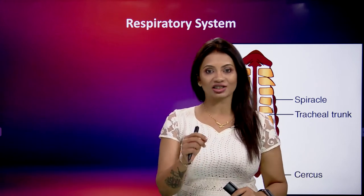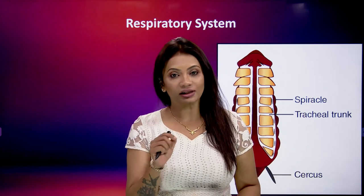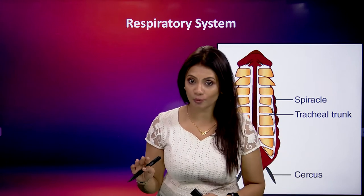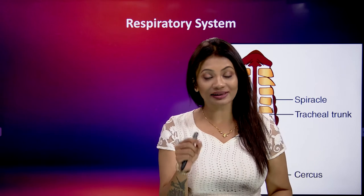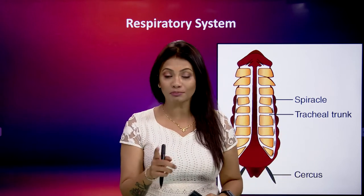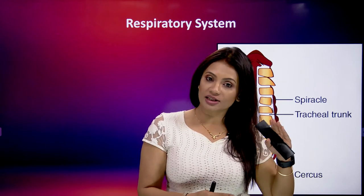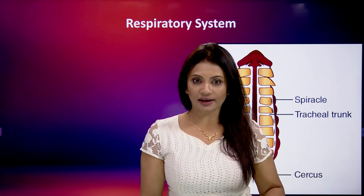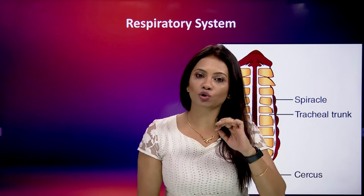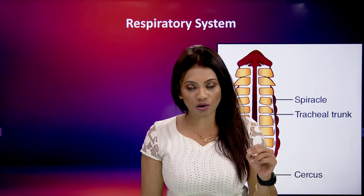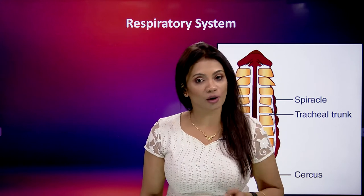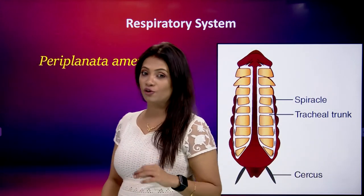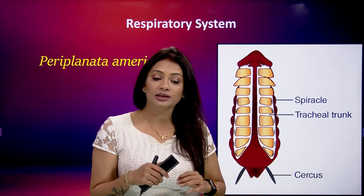Why is blood not involved? Because the cockroach's circulating fluid, that is hemolymph, does not contain a respiratory pigment. We have a respiratory pigment which we call hemoglobin, but cockroaches do not have hemoglobin. That is why their blood or circulating fluid is not red in color but is whitish in color. Since blood is not playing a role in the exchange of gases, it is the respiratory system which has to go to each and every cell of the body to provide oxygen and take away carbon dioxide. The scientific name for the cockroach we are studying is Periplaneta Americana.